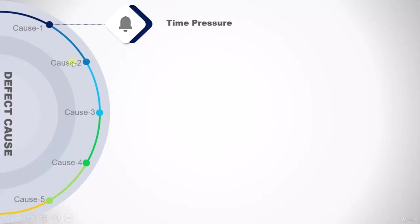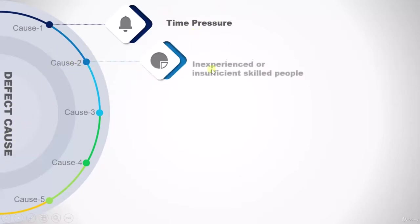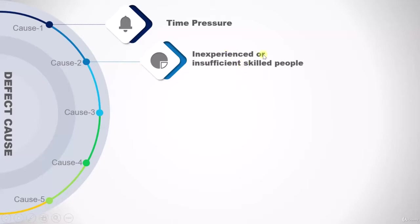The second cause is inexperienced or insufficiently skilled people. If you are in an organization where people are not skillful, then since they don't have an overall idea of the project, that may result in a defect and that could be one of the causes of a defect.